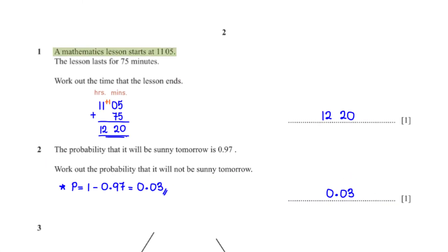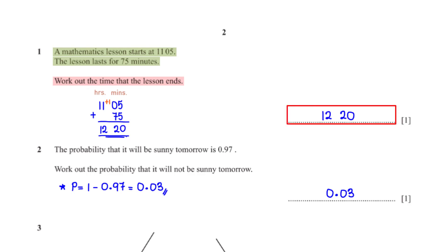A mathematics lesson starts at 11:05. The lesson lasts for 75 minutes. Work out the time the lesson ends. To get the time the lesson ends, we simply add the duration of 75 minutes to the start time of 11:05. Under the minute column, 5 plus 75 is 80. Since 60 minutes is one hour, we add 1 to the hour column and leave the remaining 20 minutes. Under the hour column, 11 plus 1 is 12, so the lesson ends at 12:20.